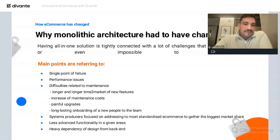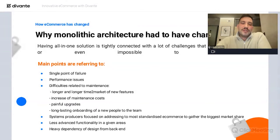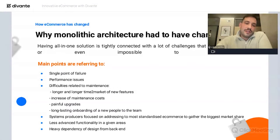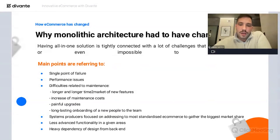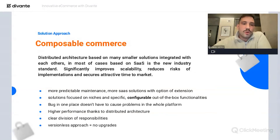More generally, monolithic systems try to address as many elements as possible, which is especially problematic for specific business models because it comes with less advanced functionalities in any given area. And of course there's the heavy dependency of design improvements on back-end operations.